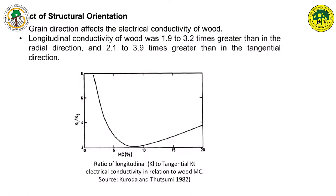In the wood cell, longitudinal conductivity is around two to three times higher than radial directions, and it can go up to four times with respect to the tangential directions. But if you take the ratio at around eight percent moisture content, it comes to almost a constant value. The ratio of tangential to radial conductivity is almost constant, reaching around one at a moisture content of about eight percent, and it gradually increases up to the fiber saturation point (FSP).